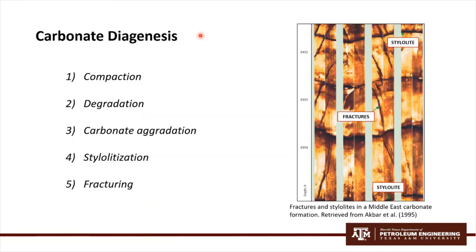Carbonate diagenesis can be divided into five mechanisms: compaction, degradation, carbonate aggradation, stylolitization, and fracturing. Compaction is the reduction of pore spaces due to overburden load. Degradation is the destruction of carbonate material through chemical dissolution. Carbonate aggradation is the construction of carbonate material through precipitation and recrystallization. Stylolitization is the formation of stylolites. And finally, fracturing is the fracturing of the rock.